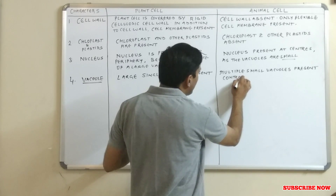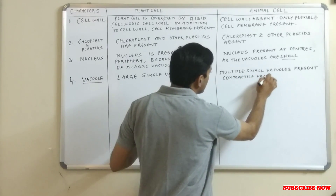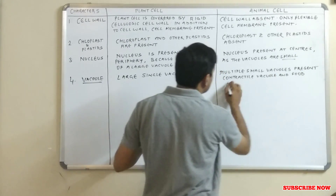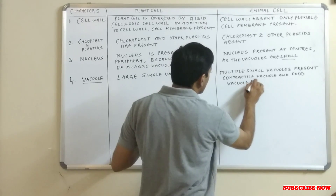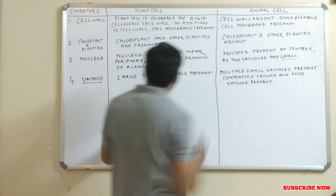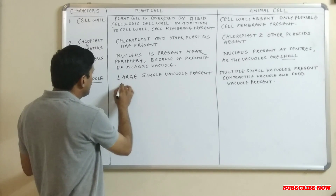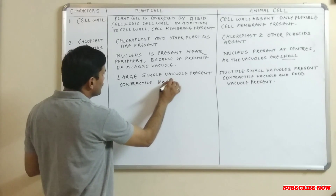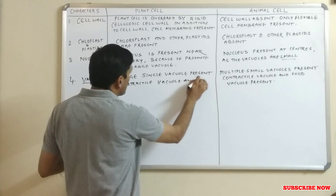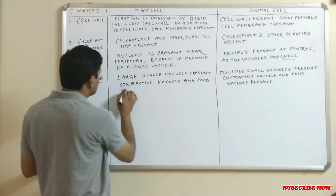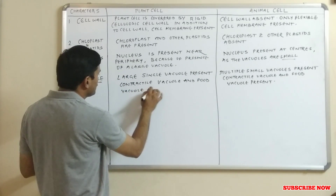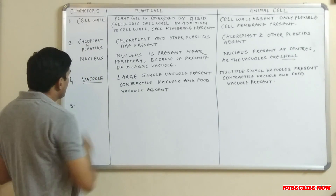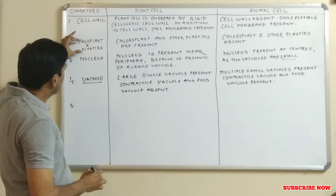Also, in the animal cell, contractile vacuoles and food vacuoles are present. While in the plant cell, contractile vacuoles and food vacuoles are absent. This is another point of difference.